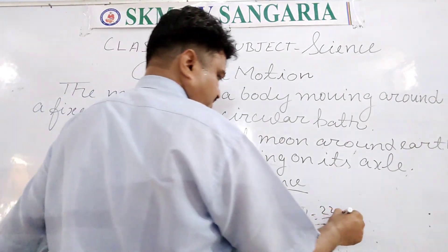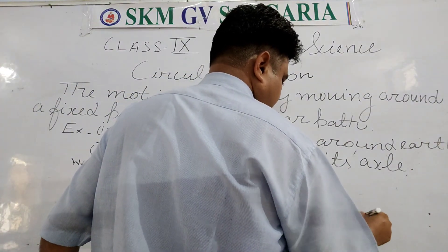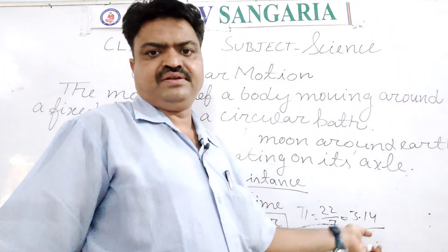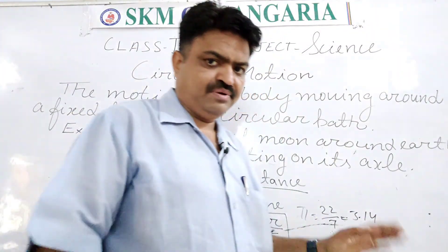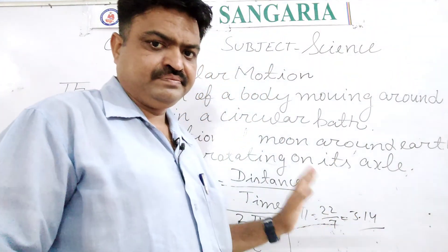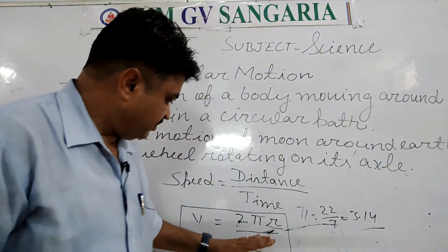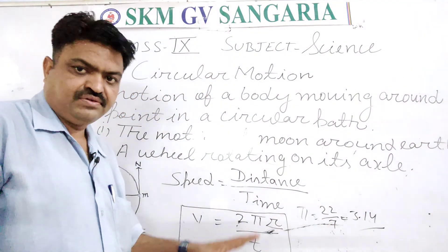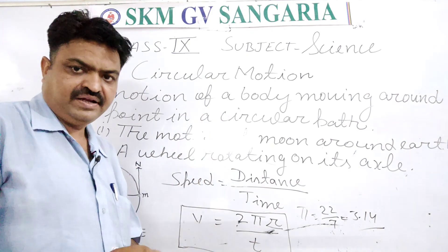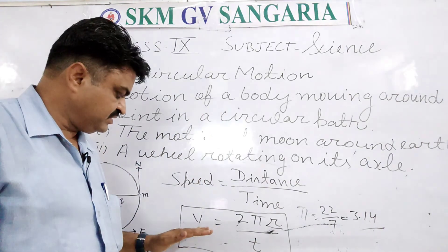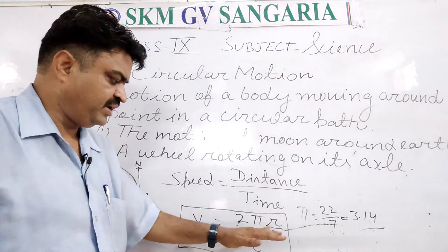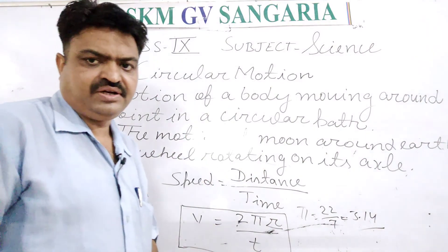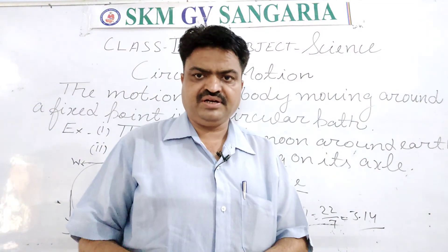We also write pi as 3.14 — it has a fixed value. This is about pi. So this formula you will learn in the case of circular motion. Speed is equal to 2πr upon t. So that is about circular motion.